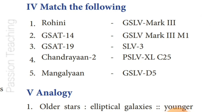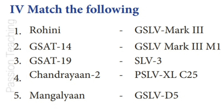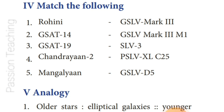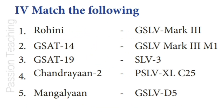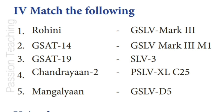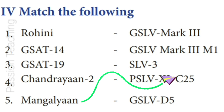Fourth Roman Letter: Match the Following. 1) Rohini — SLV-3. 2) GSAT-14 — GSLV-D5. 3) GSAT-19 — GSLV Mark 3. 4) Chandrayaan-2 — GSLV Mark 3 M1. 5) Mangalyan — PSLV-XL C25.